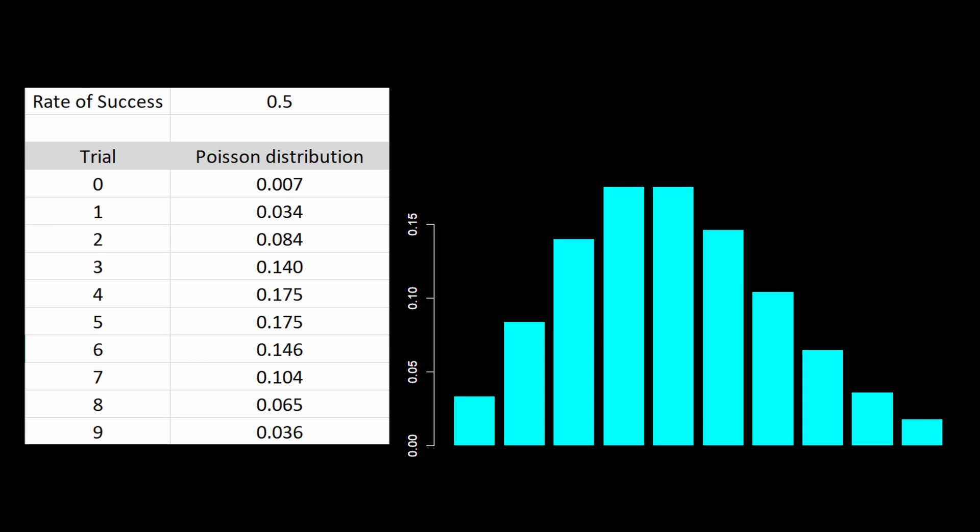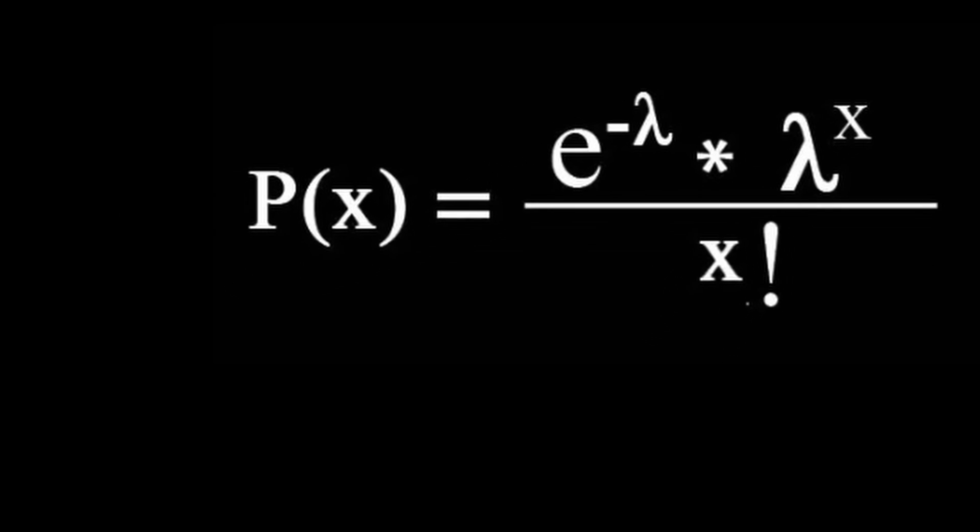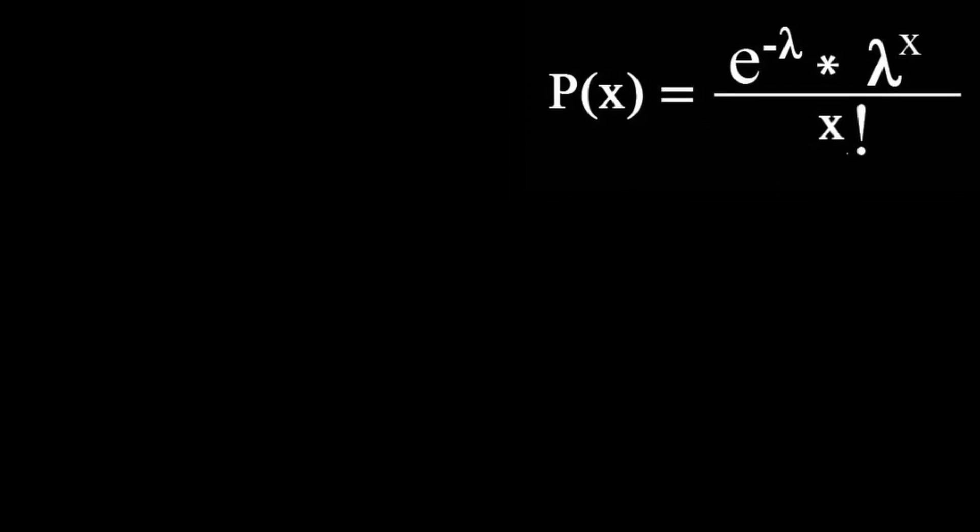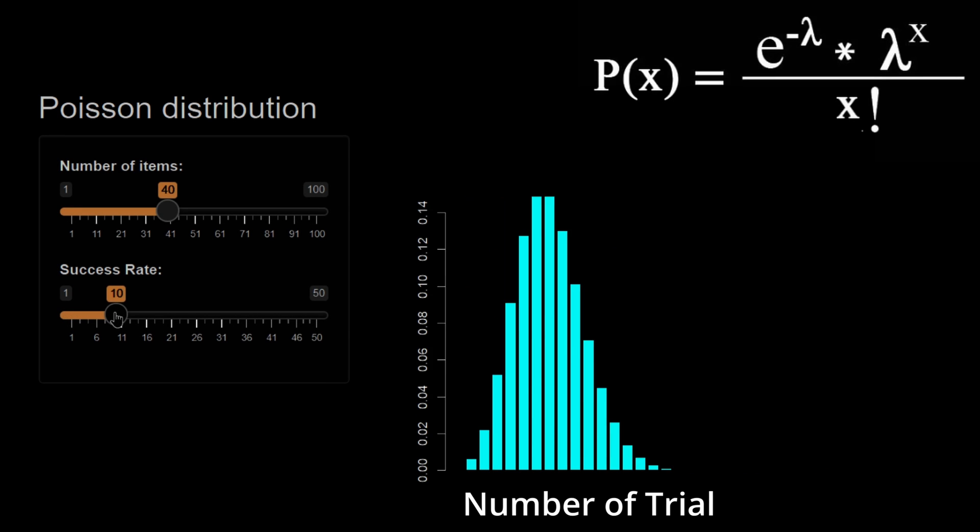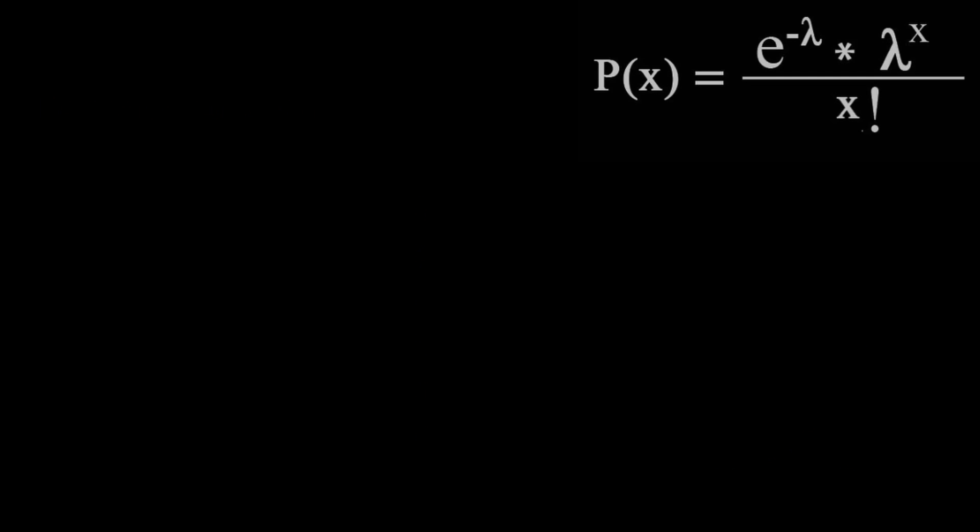From the graph, you can see that the most likely situation is going to be 5 out of 10 people in the room are female. It can be modeled using the equation as shown right here. From the equation, you can see that if we adjust the probability of it happening and the chances of success, you can actually change the shape of the distribution.